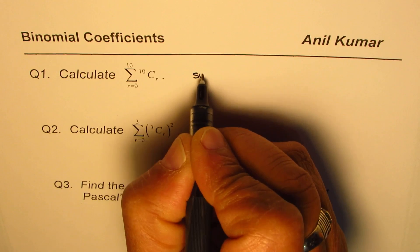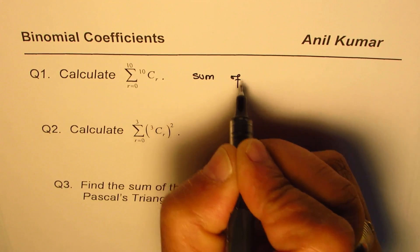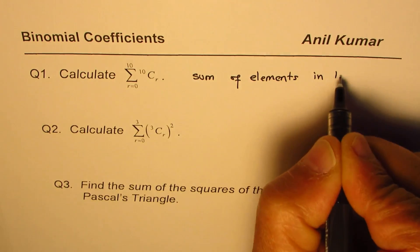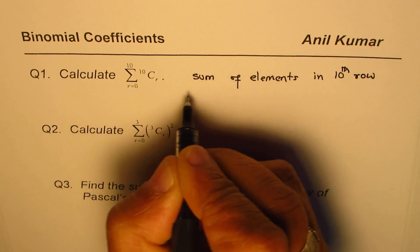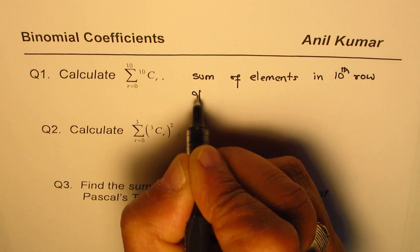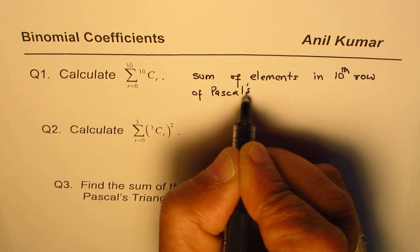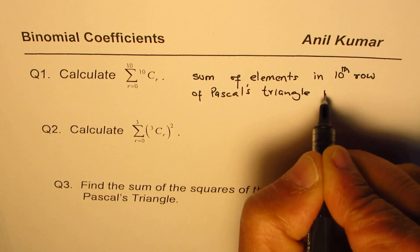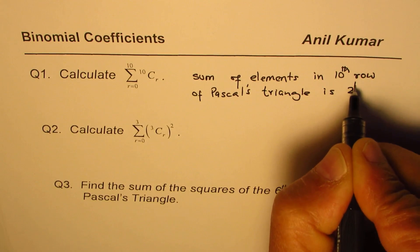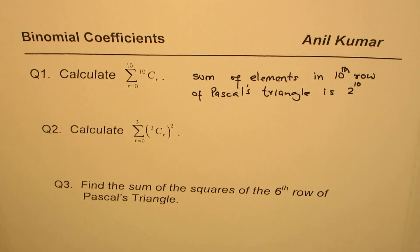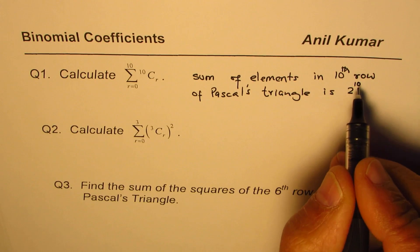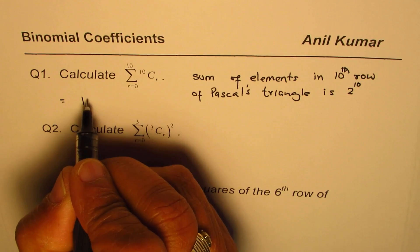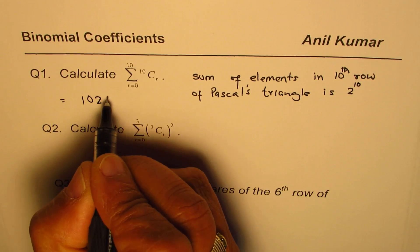And as you know, sum of elements in 10th row of Pascal's triangle is 2 to the power of n, n in this case is 10. And therefore, it should be 2 to the power of 10. 2 to the power of 10, you can use the calculator, but I always remember this as 1024. So the answer is 1024 for this particular case.